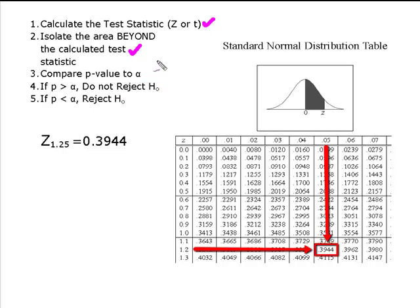And then I'm going to compare the p-value to alpha. We remember our rule for p-value. If p is greater than alpha, do not reject H0. If p is less than alpha, reject H0. Remember, if p is low, H0 must go.